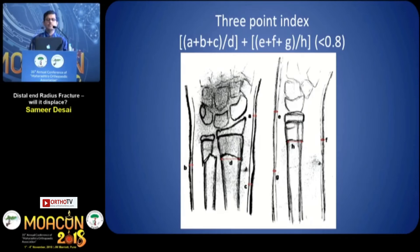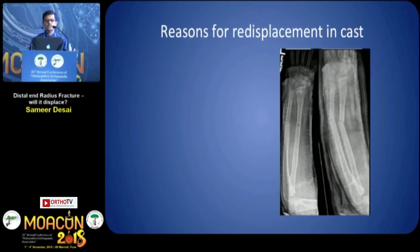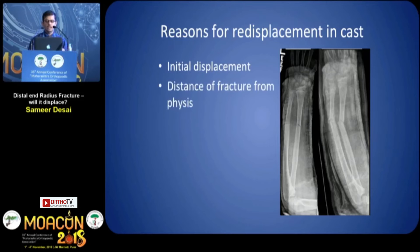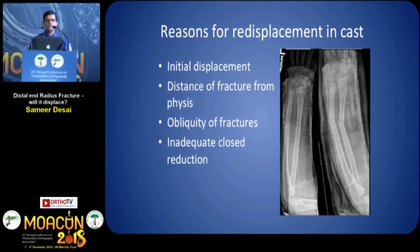Another index is the three-point index, which is more sensitive for distal radius fractures but a little more complex. Once you have given a cast, the reasons for re-displacement include: if the initial displacement is more, there is a higher chance it may displace; higher fractures have a higher chance of displacement; more oblique fractures have a higher chance; inadequate reduction; and of course poor cast molding.